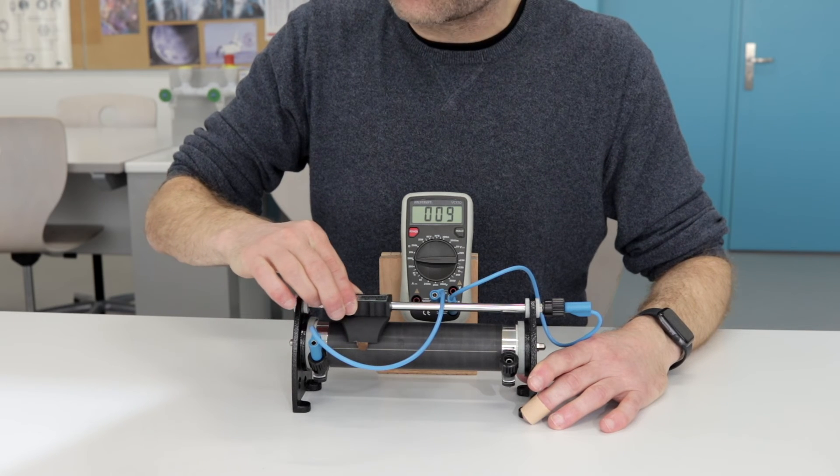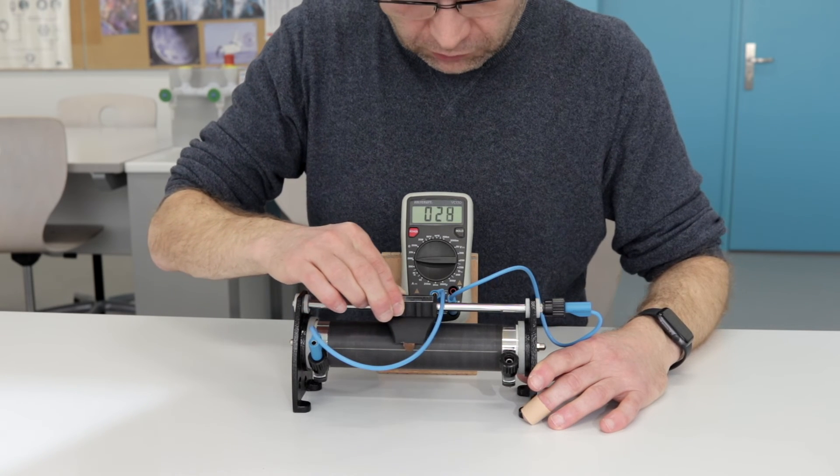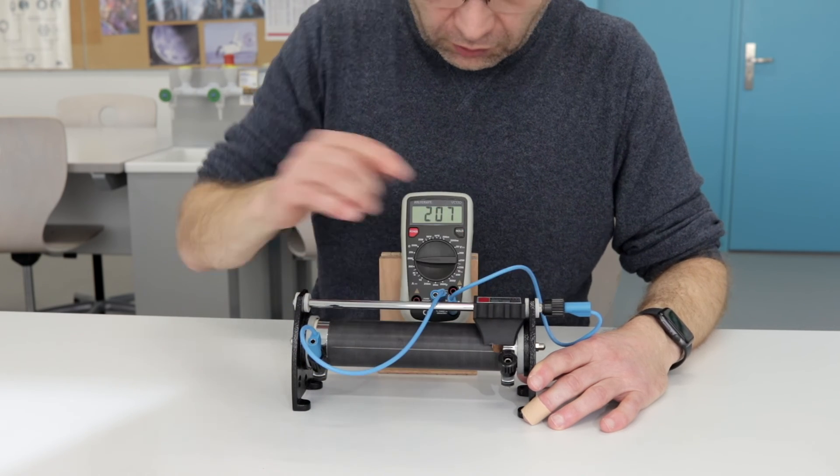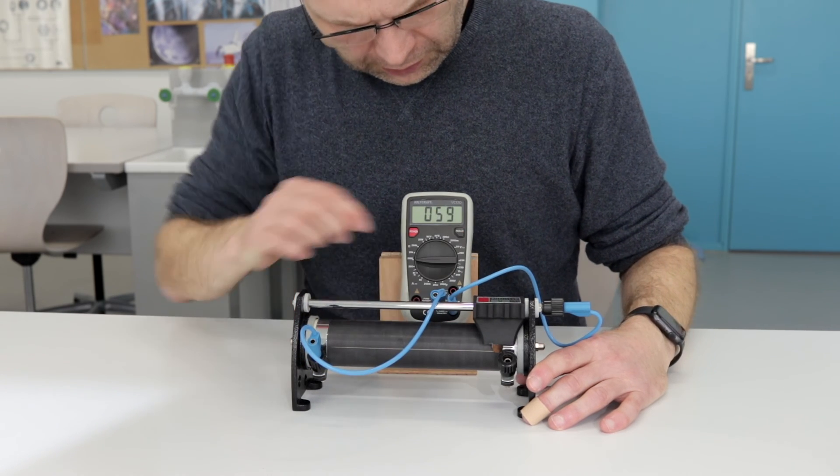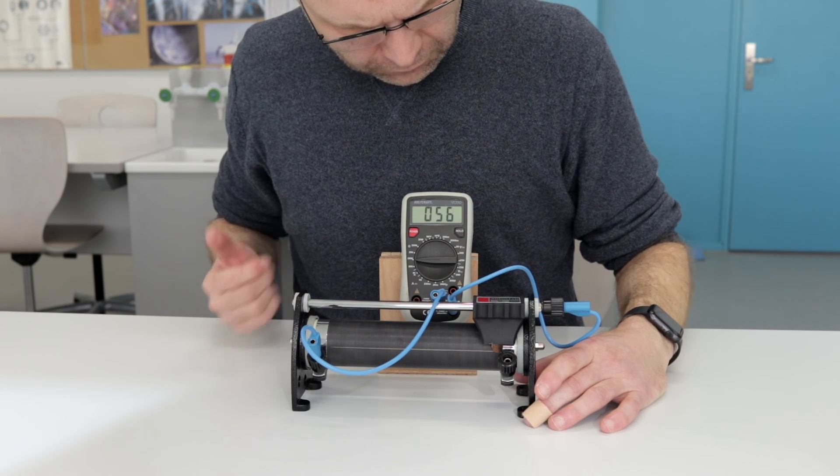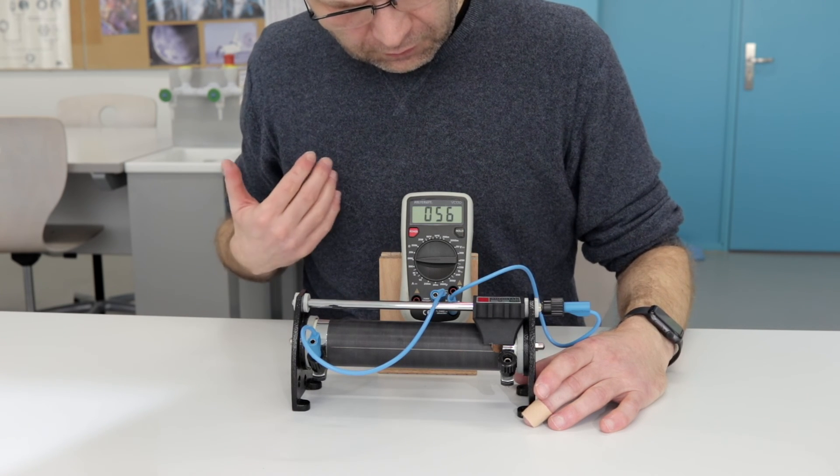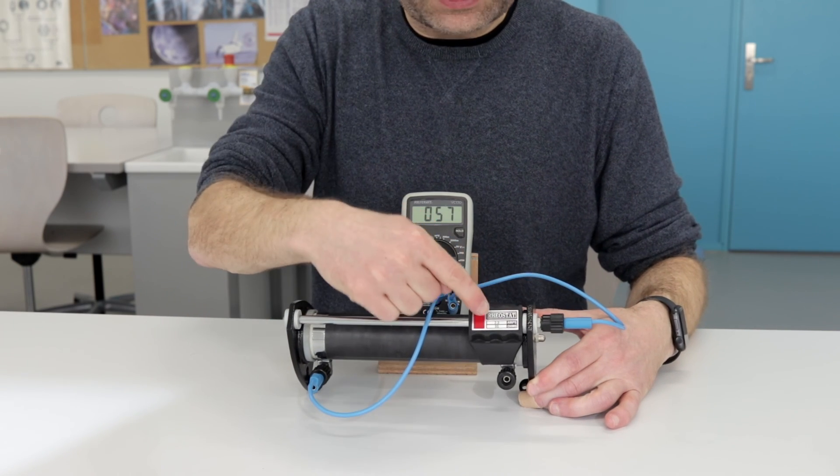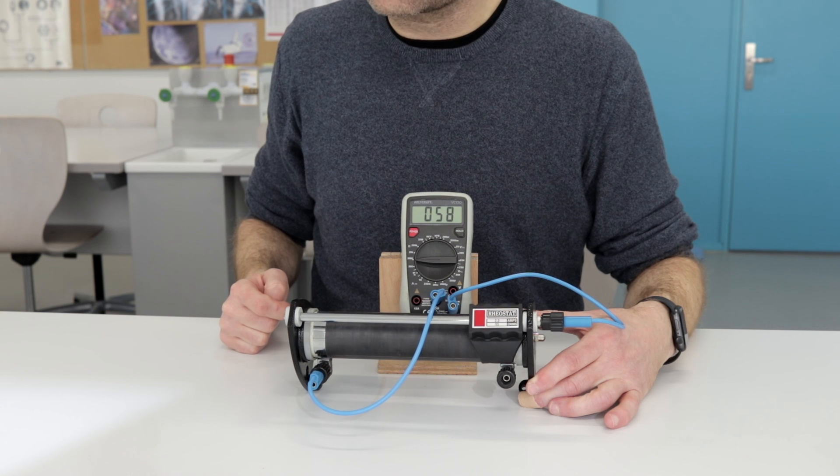But as I move the wiper, the resistance increases. Actually, the maximum resistance of this variable resistor is about 56 ohms. And the value is usually written somewhere on the variable resistor, the maximum value.